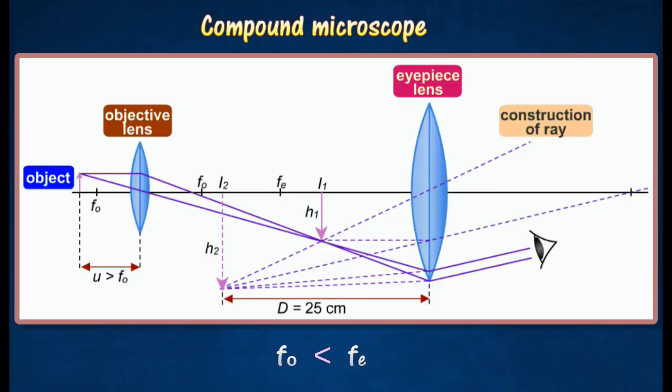The object is placed at a distance u, greater than FO, from the objective to form an image I1, which is real, inverted and diminished at its focal point FO.